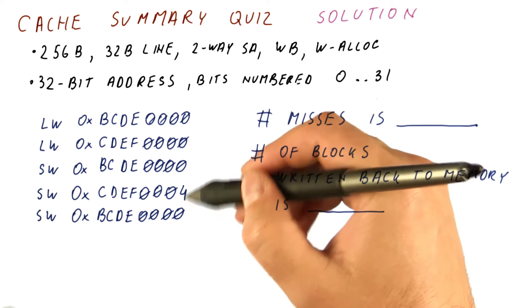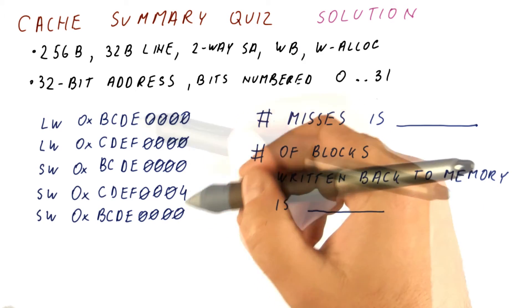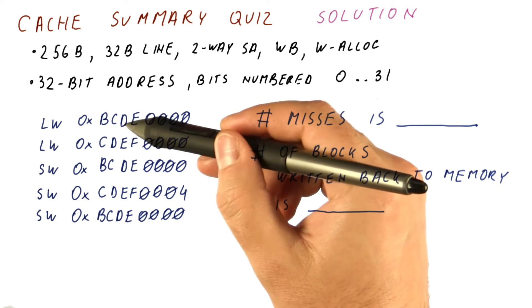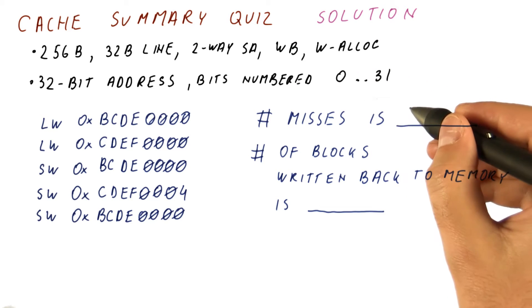So we only really need to consider what happens in the one set where they go. This is a load. It's going to be a miss because the cache is empty, so we have a miss.